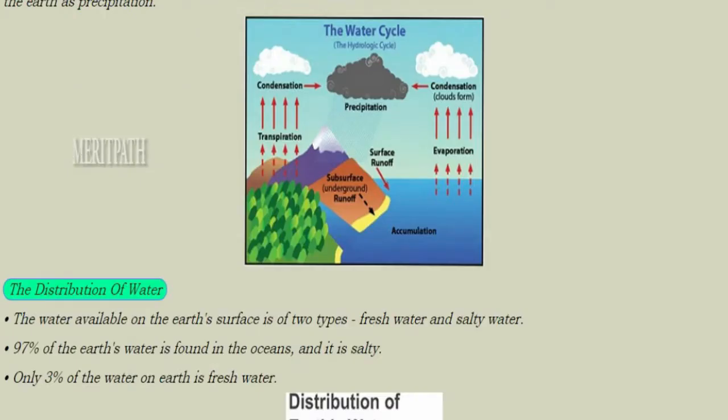This image shows the water cycle, where there is transpiration, evaporation, condensation, and then precipitation. Again, precipitation comes back as rain.